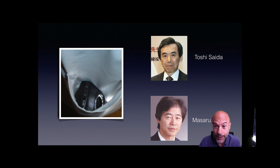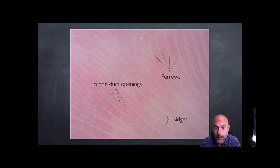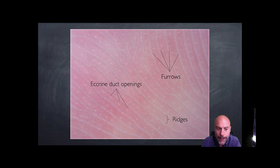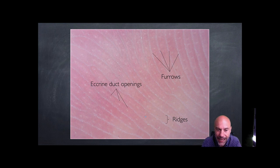We need to acknowledge our colleagues from Japan, to whom we owe most of the knowledge we have today, including the basic knowledge which is based on the peculiar anatomy of acral skin that consists of alternating furrows and ridges. The furrows are thinner than the ridges, and on the ridges we can see the openings of the eccrine ducts.